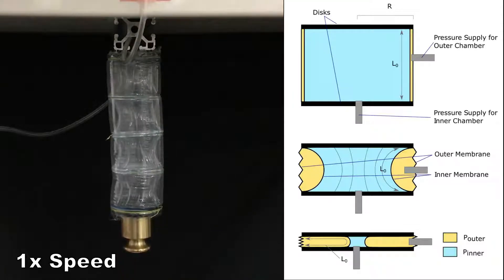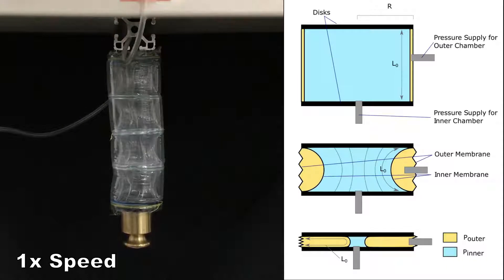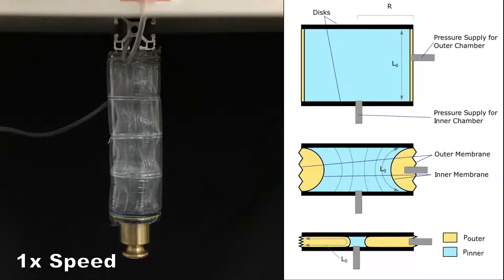When pressure is added to the outer chamber, the inner membrane wrinkles inwards, forming an hourglass shape and causing a contracting force.